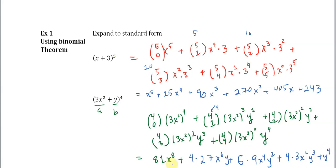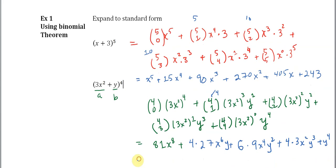And now we simplify, so we get 81x to the eighth plus 4 times 27, which is 108, x to the sixth y, plus 54x to the fourth y squared, plus 12x squared y cubed, plus y to the fourth.